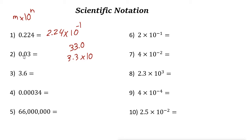We want to get an integer greater than 1 and less than 10. For 0.03, we need to move the decimal point 2 times to the right, giving us 3. Since we moved it to the right, the power is negative, and we moved 2 decimal digits, so the answer is 3 times 10 to the power of negative 2.